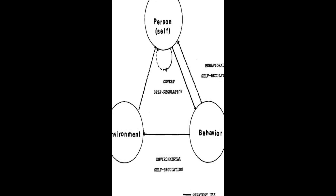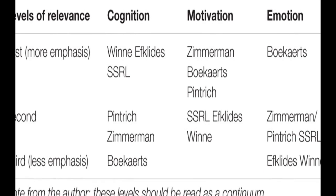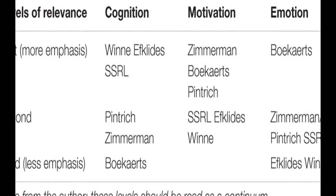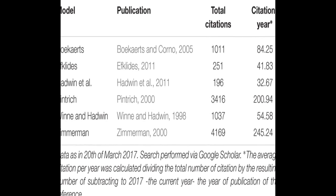The models are then compared in terms of phases and subprocesses, how they conceptualize metacognition, motivation, and emotion, top-down/bottom-up approach, automaticity, and context.